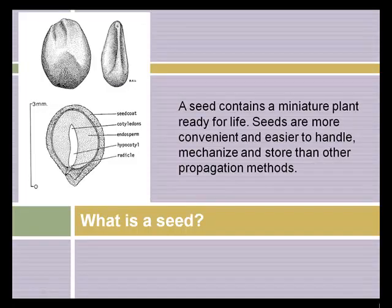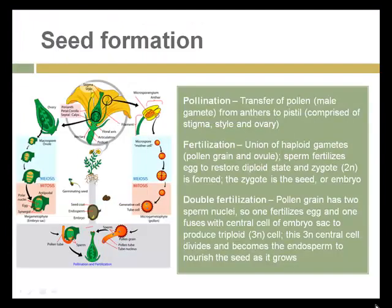So what is a seed? A seed is a little miracle — a miniature plant ready to spring into life. The use of seeds has critical advantages of convenience and ease of handling; they're easy to sow mechanically and store compared to other propagation methods. Here is a cross-section of a seed showing the internal functions. The cotyledons and the radicle are the main parts that become the visible parts of the plant, forming the embryonic plant inside the seed.